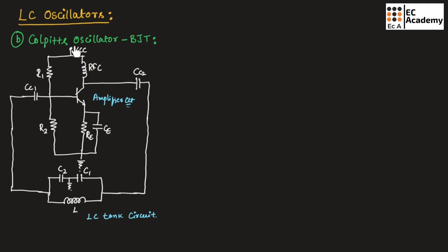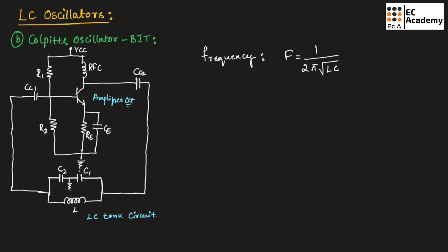Now let us understand the Colpitts oscillator using BJT. The Colpitts oscillator is similar to the Hartley oscillator; the only difference is in the LC tank circuit, which has two capacitors and one inductor. The frequency of oscillation is F = 1 / (2π√(L × C_eq)), where C_eq = (C1 × C2) / (C1 + C2).